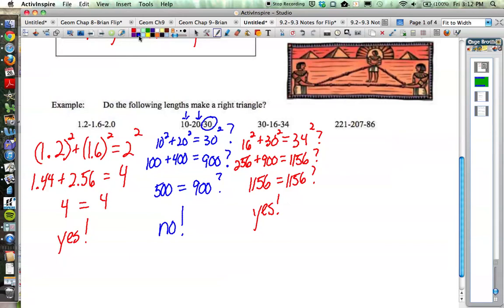Last example, and hopefully you're getting how we would check this. Let's come up with the shortest leg, which is 86. So it's 86 squared plus the next shortest leg, 207 squared. Is that equal to 221 squared? 86 squared is 7,396, 207 squared is 42,849, and 221 squared is 48,841. Does that work out?